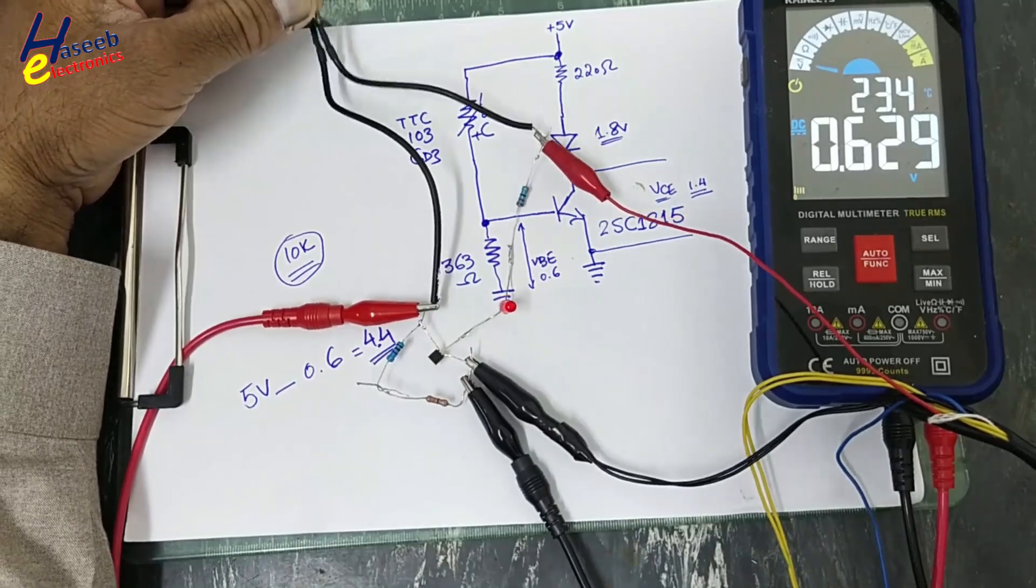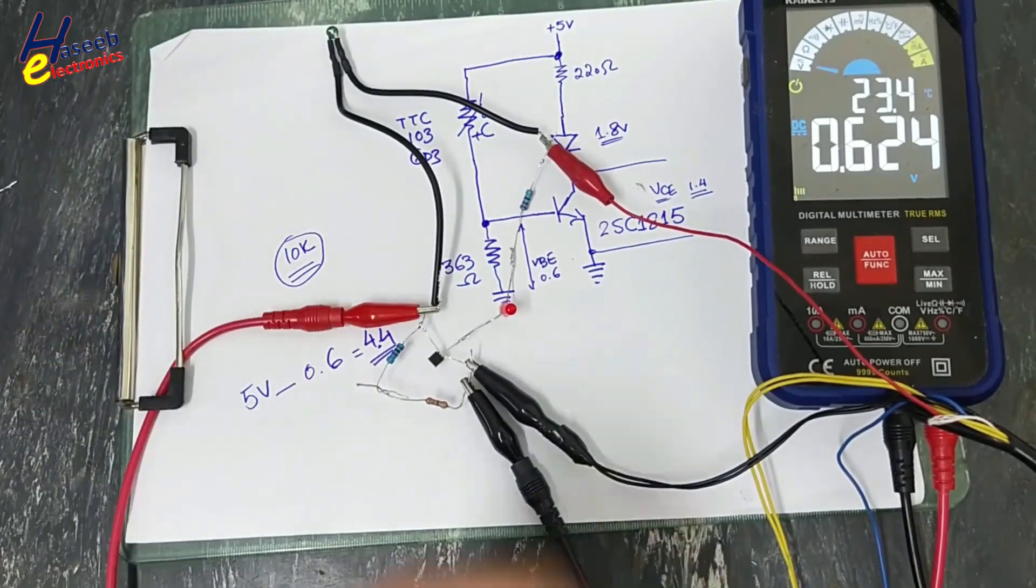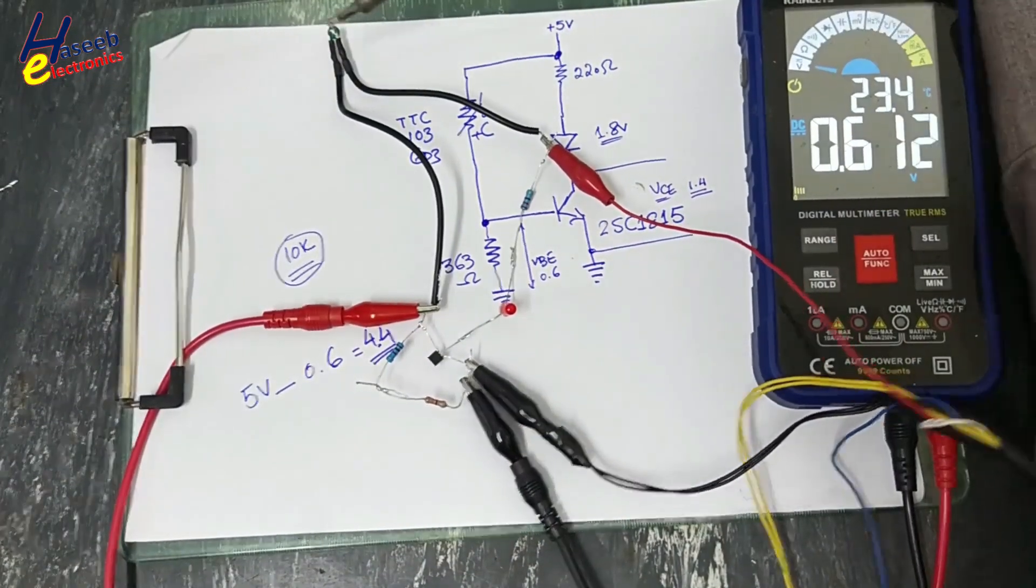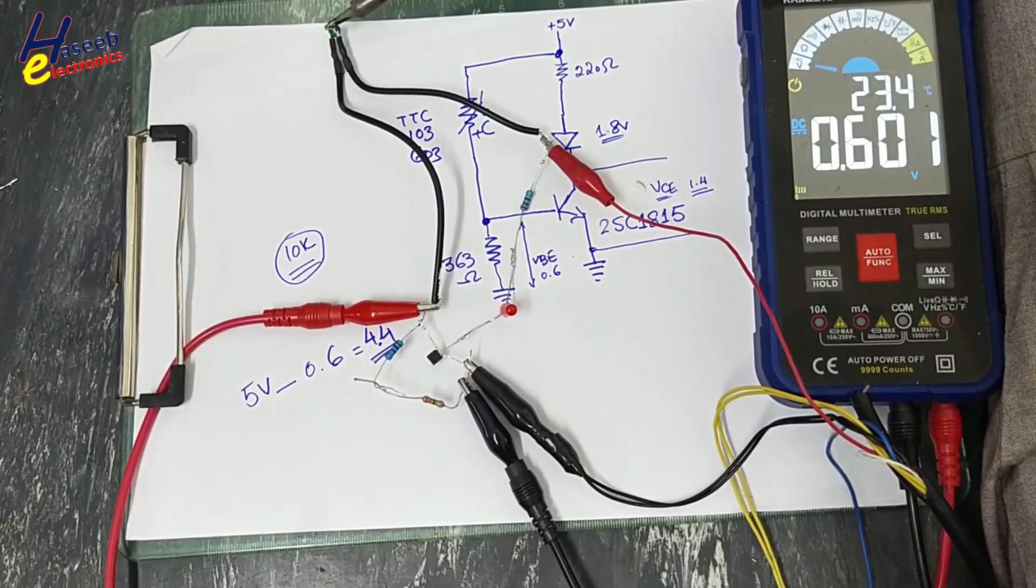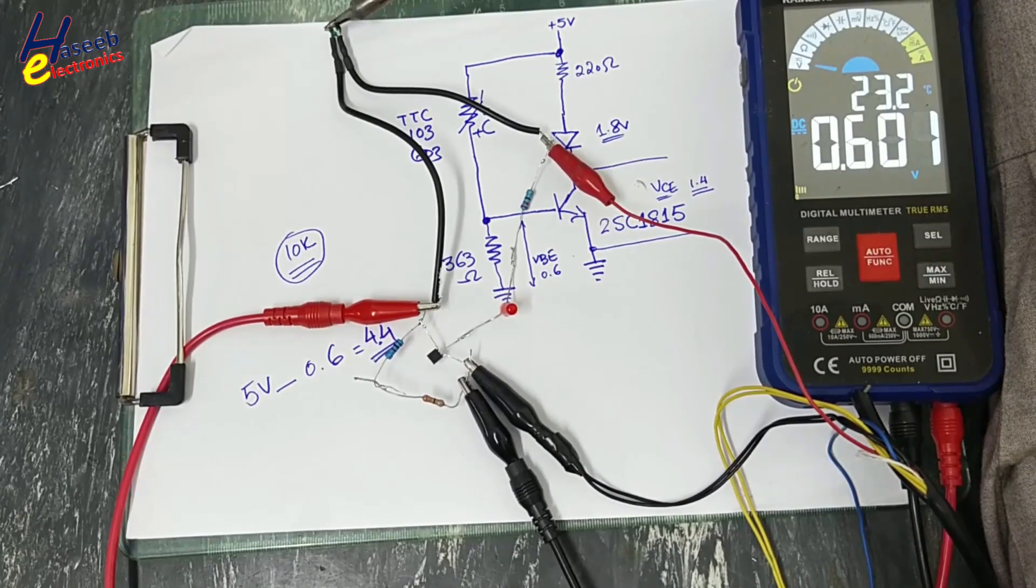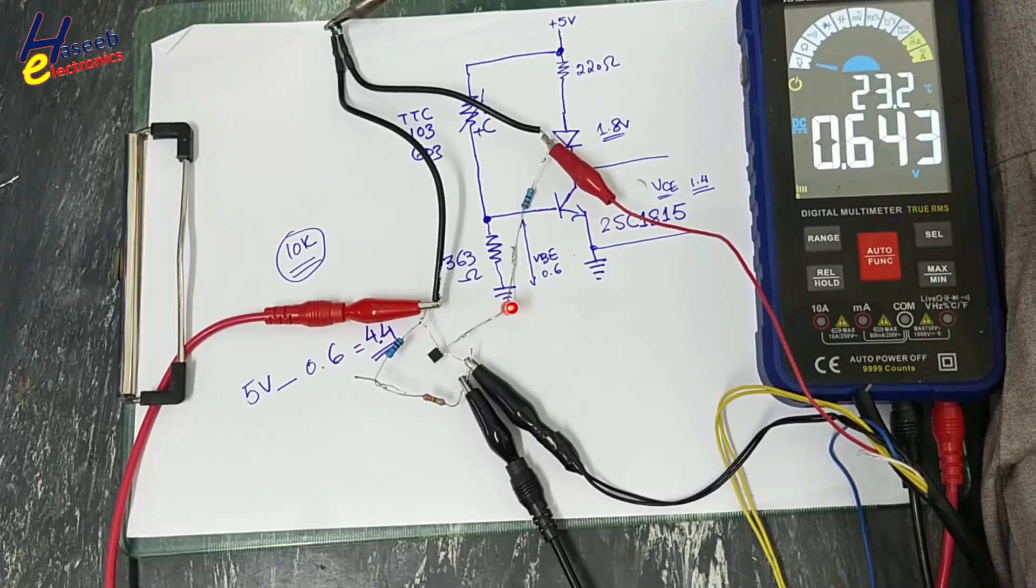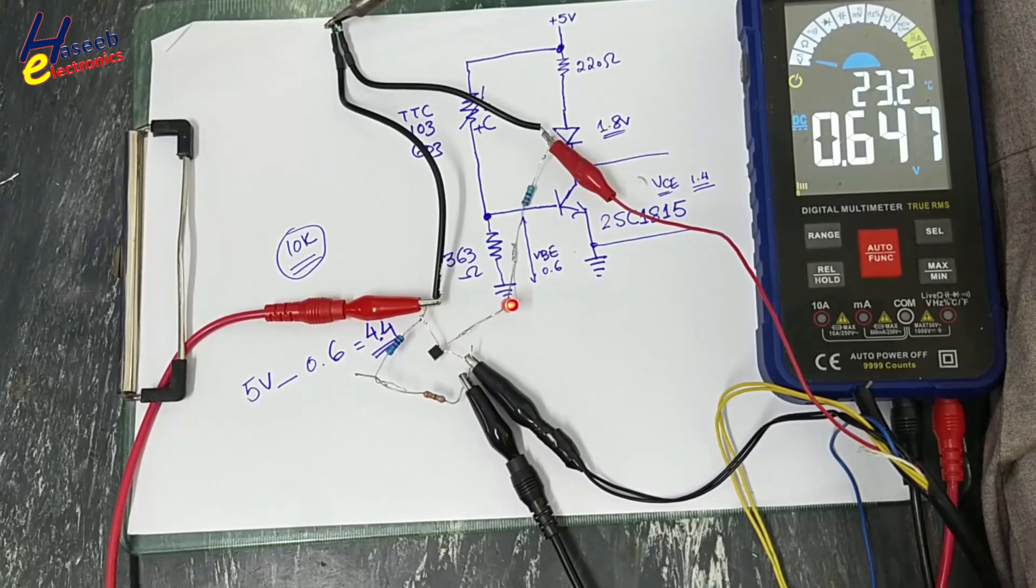It is a linear amplifier. We are controlling the conduction of this transistor by linear amplification. When the temperature is increasing, the brightness is increasing linearly.